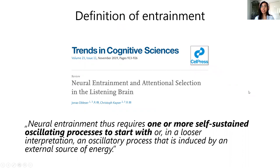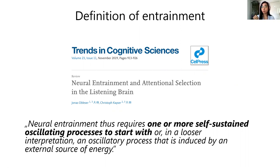First, a bit of a disclaimer and also to state my definition of entrainment. I cited a quote from a review paper by Jonas Oblezer and Christoph Kaiser in Trends in Cognitive Sciences, wherein they stated that neural entrainment requires one or more self-sustained oscillating processes to start with. So for me, entrainment involves two oscillating processes or systems — one is the system to be entrained and the other one is the entraining one. The very important assumption here is that when we talk about the entrained system, we talk about attention or the neural systems, and my interest lies within distractor suppression. The very important point here, if we want to study entrainment and distractor suppression, would be to test whether distractor suppression itself is oscillatory as well.